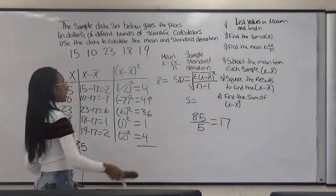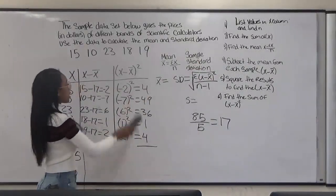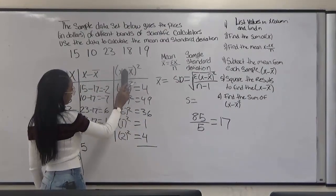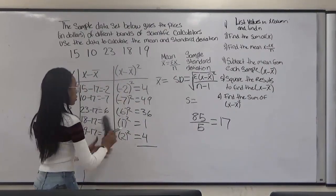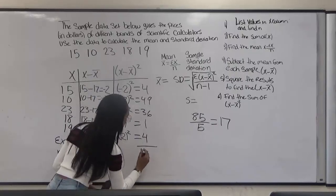So now we're going to add up our results from the sample minus the mean squared. So after we add all of these numbers up we get 94.